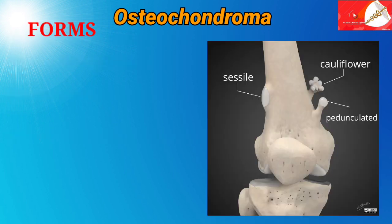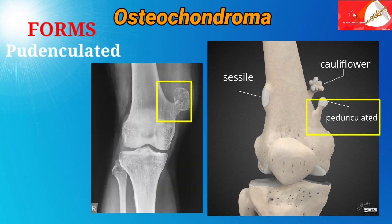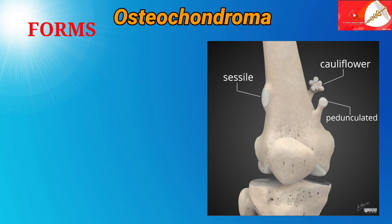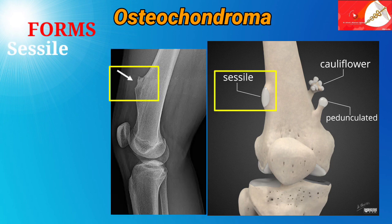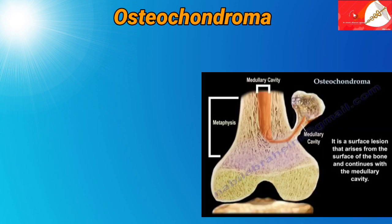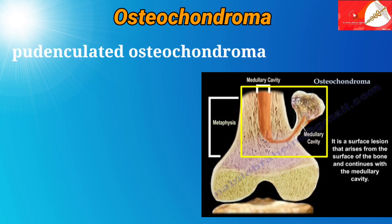Osteochondromas are of two forms: pedunculated, with a stalk, and sessile, that is flat without a stalk. The sessile form has a tendency to malignancy. Here you can see osteochondroma on the metaphyseal surface that is pedunculated and is continuous with the medullary cavity.